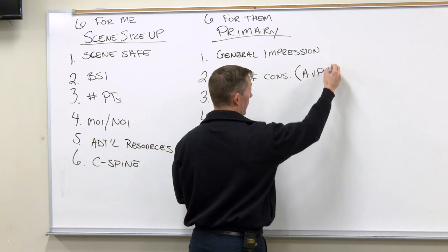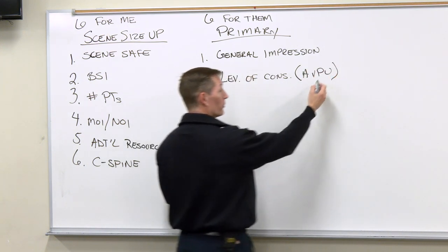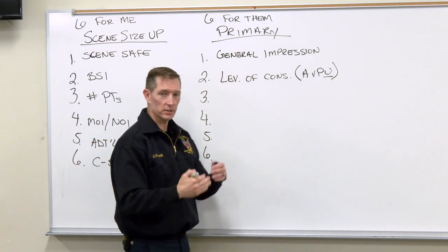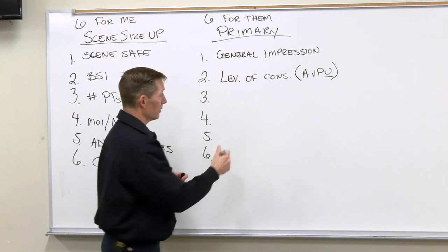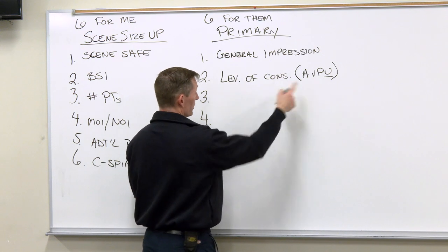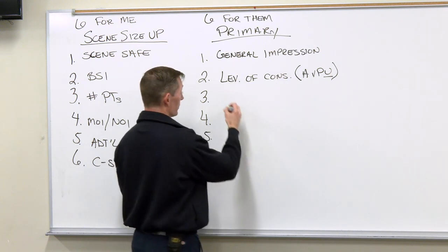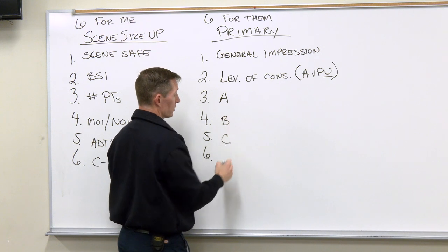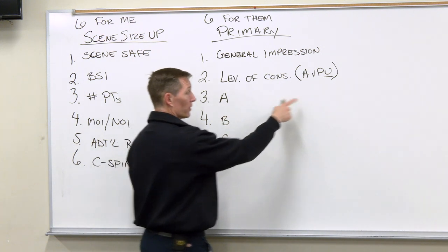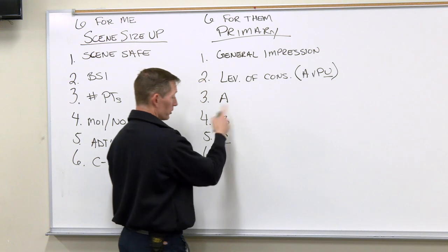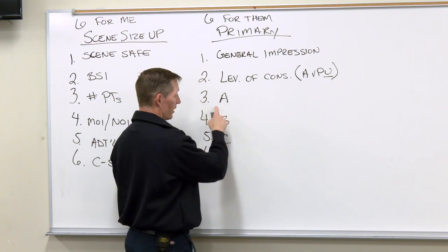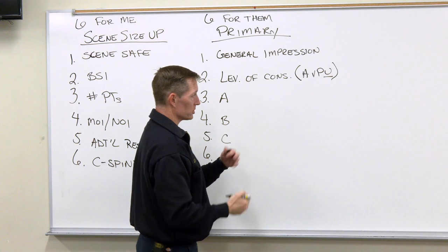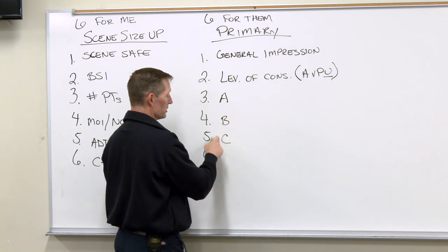Level of consciousness uses AVPU: alert, verbal, painful, and unresponsive. Remember that when we get to U, it's unresponsive and not unconscious — there is a difference. Then I check airway, breathing, and circulation. If I have an unresponsive patient, I reverse this order and it's CAB instead of ABC. But in my medical patient who's able to converse with me, I simply go ABC.